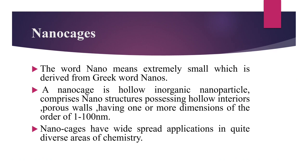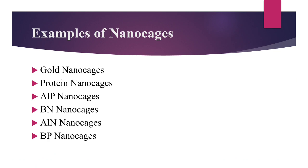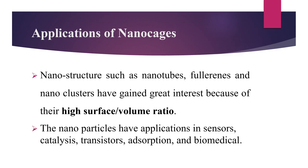Nanocages have porous walls with one or more dimensions of the order of 1 to 100 nanometers. Nanoparticles have dimensions from 1 to 100 nanometers and have wide, diverse applications in chemistry. Examples of nanocages include gold nanocages, protein nanocages, aluminium phosphide nanocages, boron nitride nanocages, aluminium nitride nanocages, and boron phosphide nanocages.